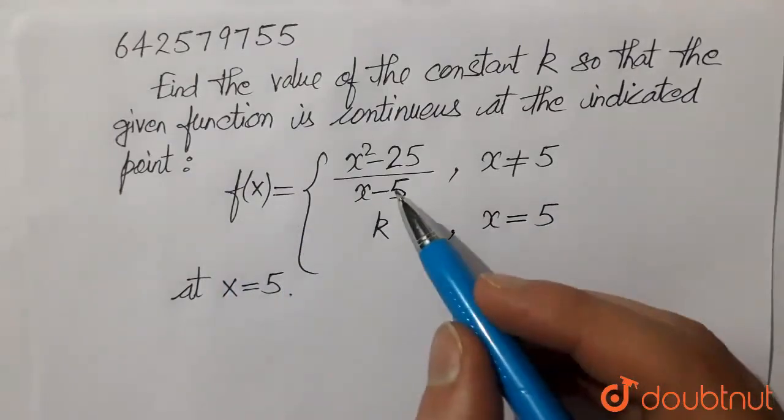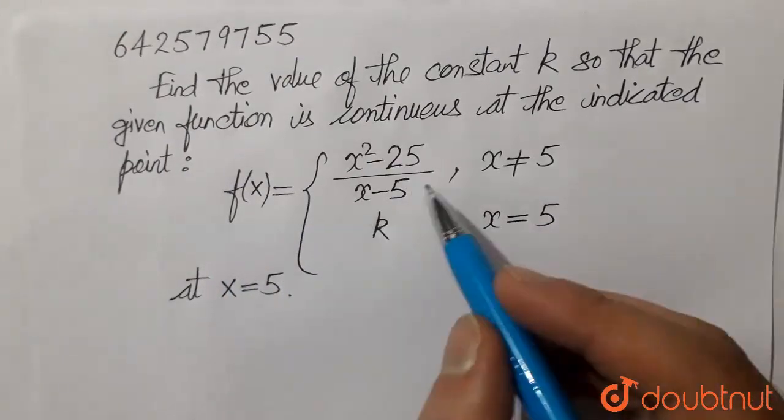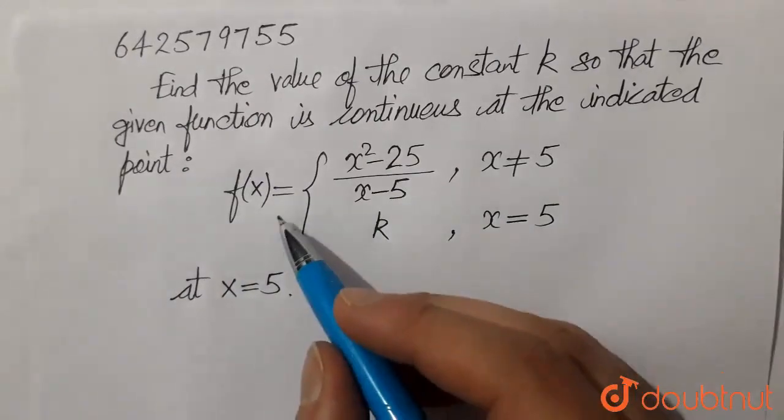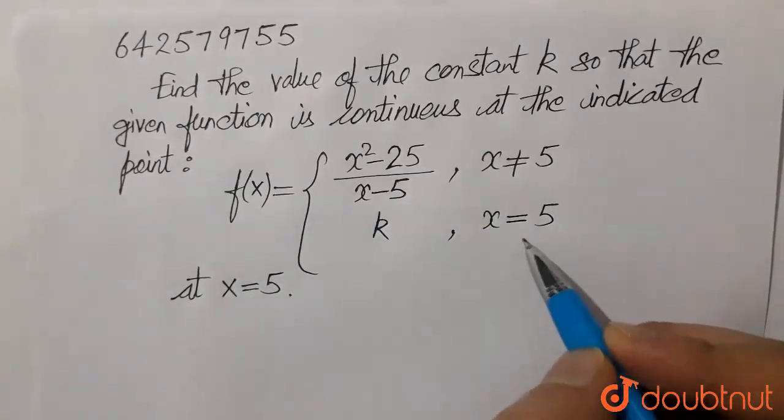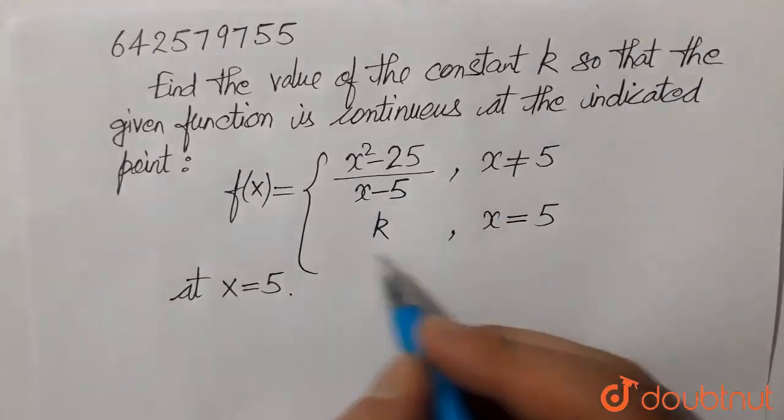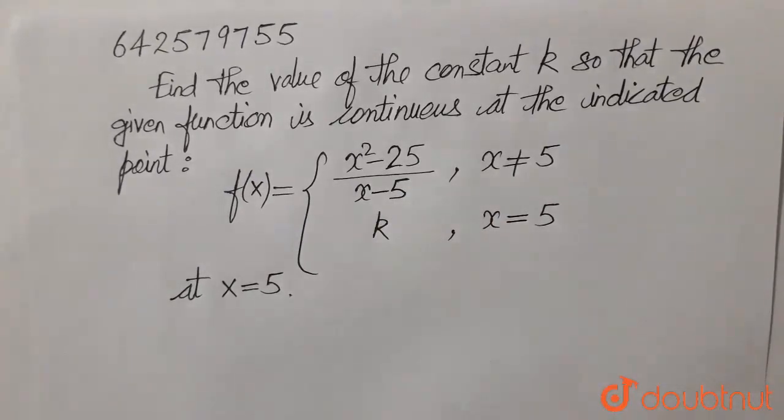We have f(x) equals x squared minus 25 divided by x minus 5 when x is not equal to 5. f(x) equals k when x equals 5. At x equals 5, the function is continuous and we have to find the value of k. Let's look at its solution.